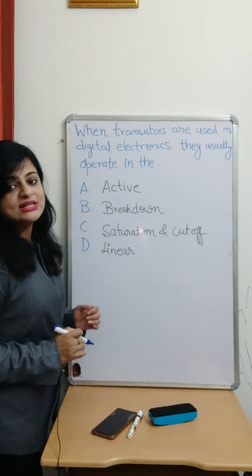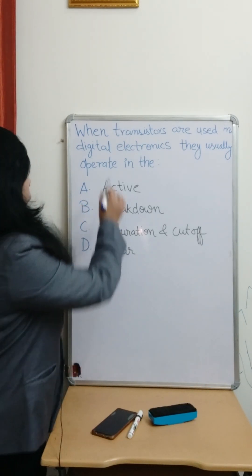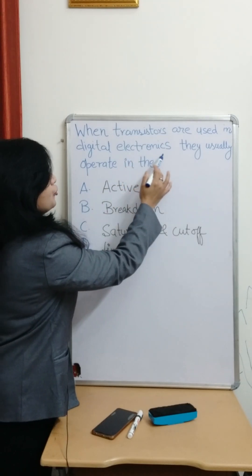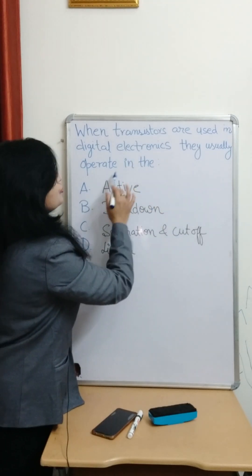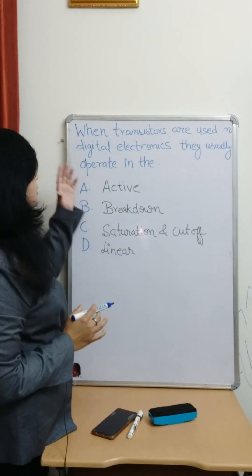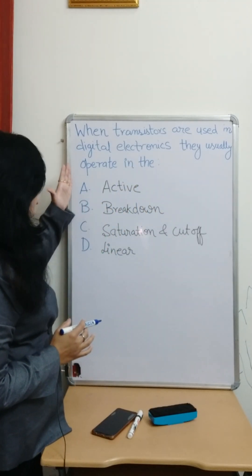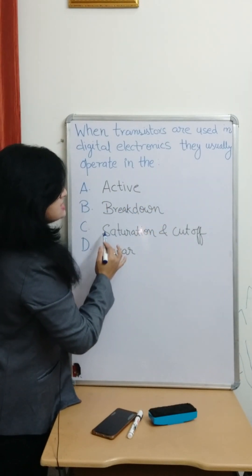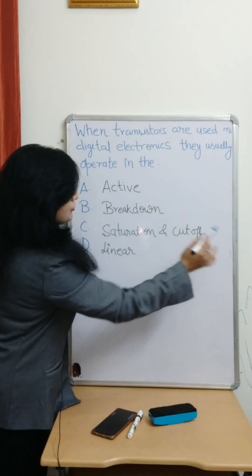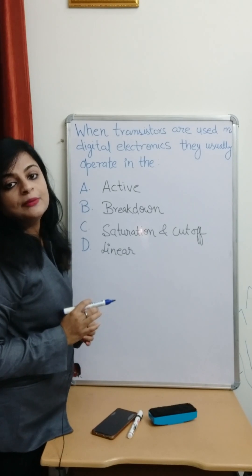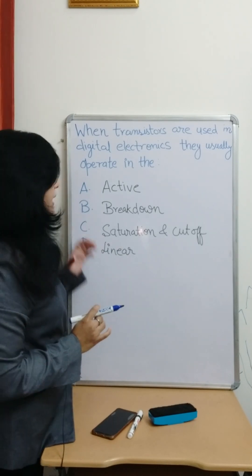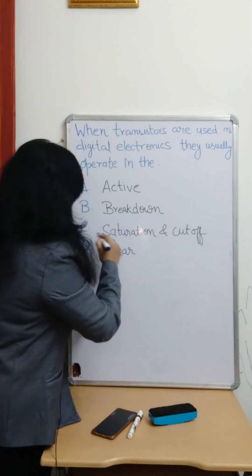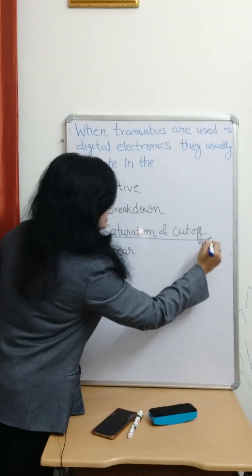The question is: when transistors are used in digital electronics, they usually operate in which region? The options are active region, breakdown region, saturation and cutoff region, or linear region. The answer is saturation and cutoff region.